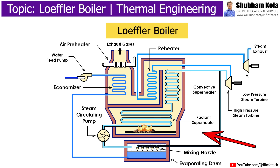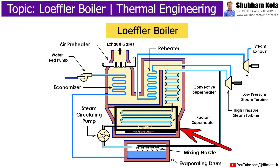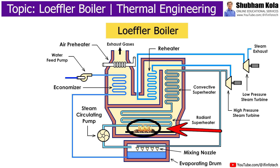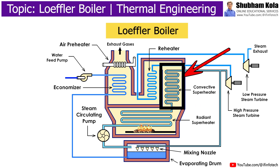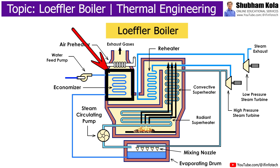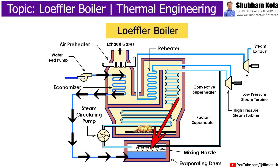The La Mont boiler consists of a radiant superheater, which superheats the steam with the help of radiation produced by burning fuel. The convection superheater is used to transfer heat from flue gases to steam. The economizer is used to heat the water before it enters the evaporator drum.